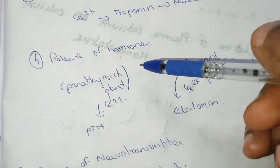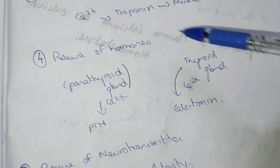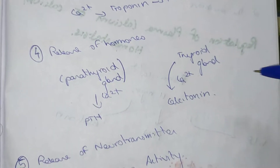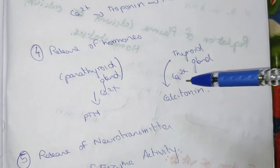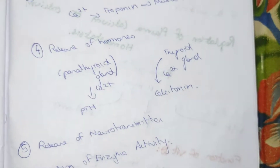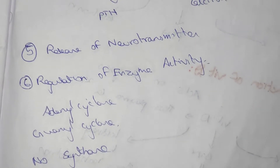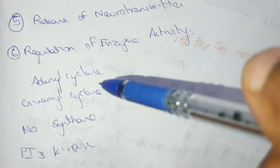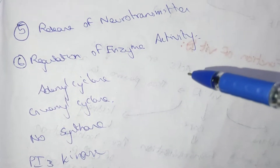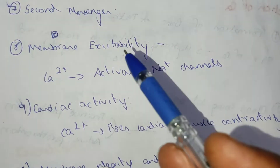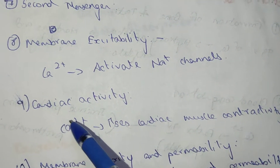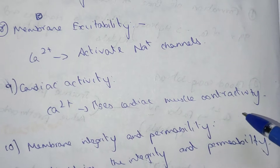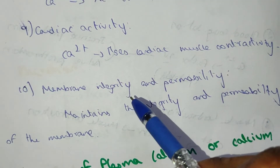In muscle contraction, calcium acts on troponin. For hormone release, calcium is needed to release PTH from the parathyroid gland and calcitonin from the thyroid gland. Calcium also facilitates neurotransmitter release, regulates enzyme activity — including adenylyl cyclase, NO synthase, and PI3 kinase — and acts as a second messenger.